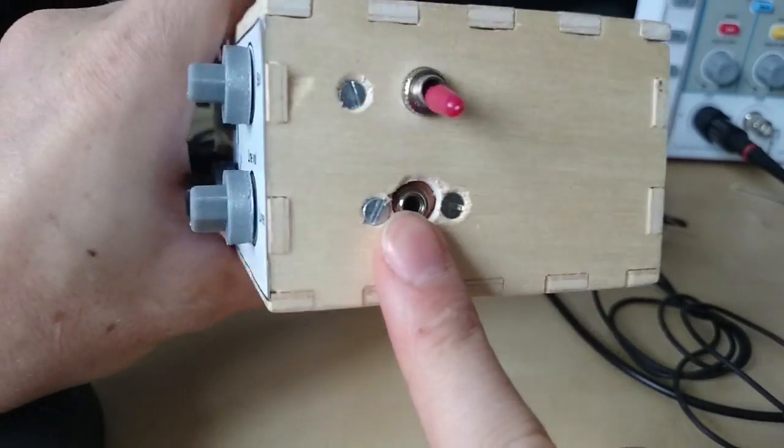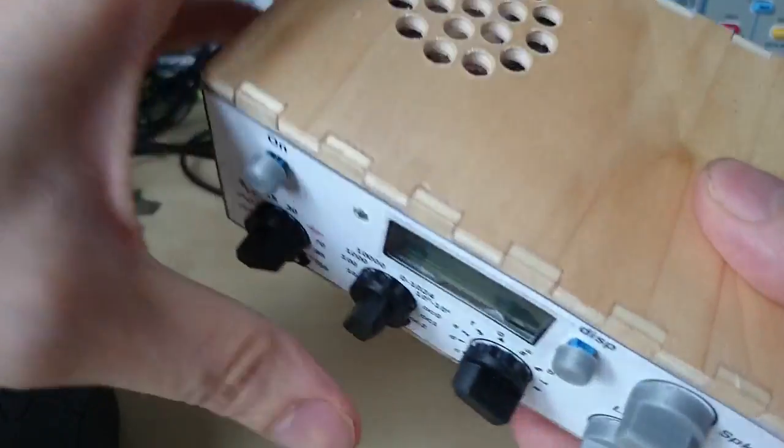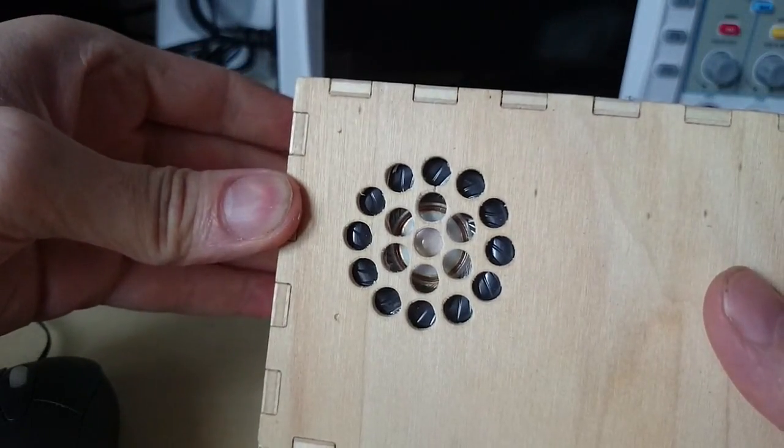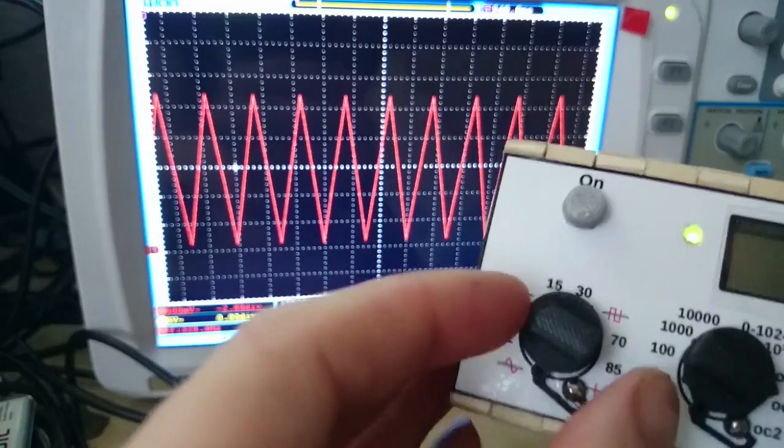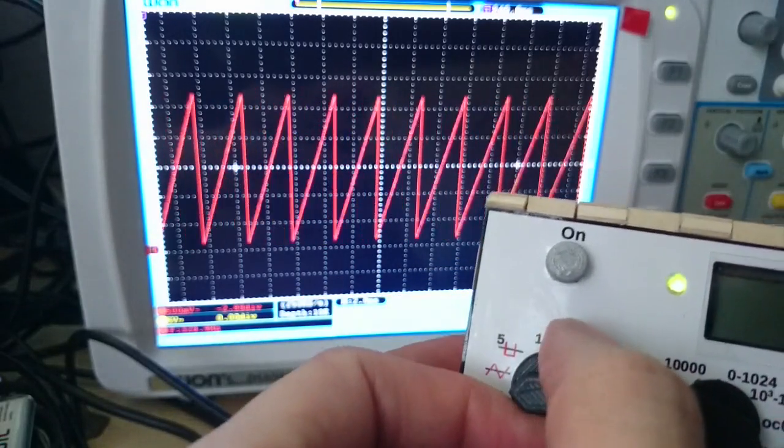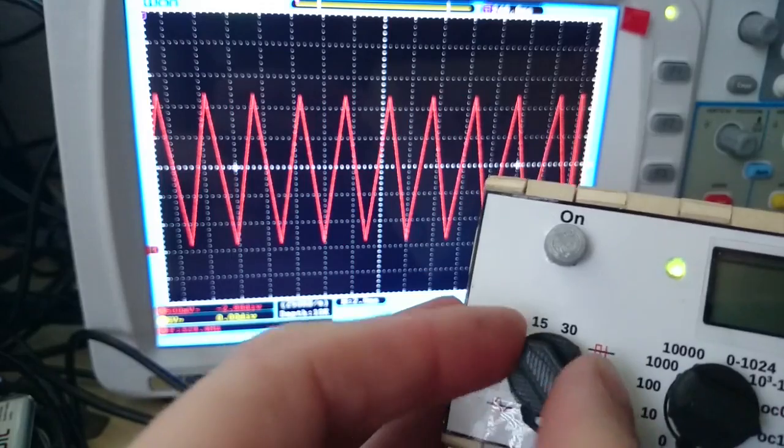There is a headphone jack as amplified output, and also a speaker in the top of the device, that plays the current sound. I can set the waveform between sine wave, sawtooth, triangle, and different flavors of square wave.